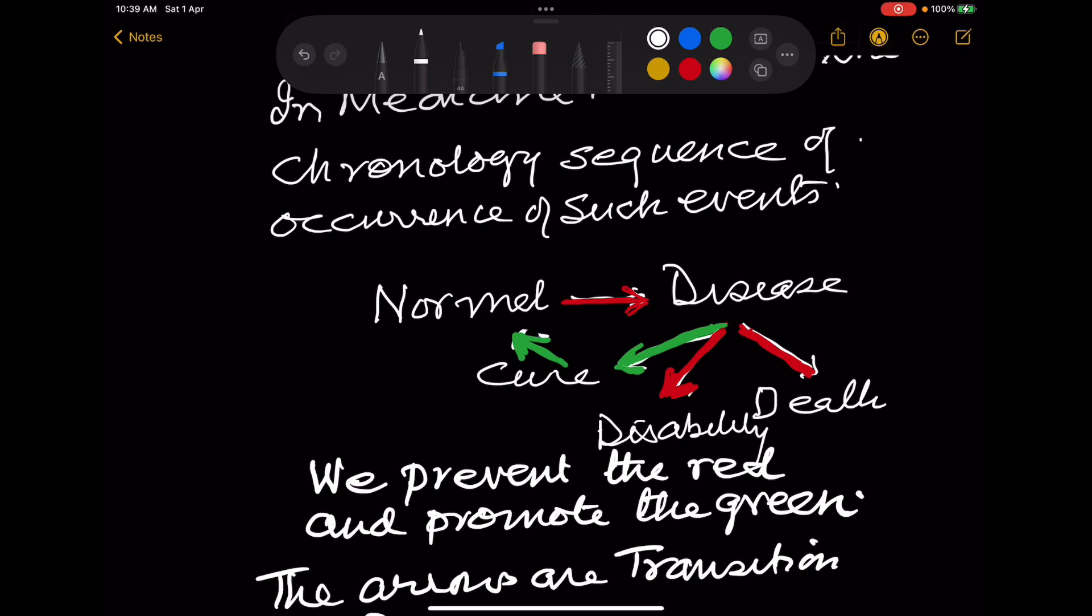Each arrow can be depicted by a transition rate. And this transition rate is controlled by factors which promote it or break it. So there are accelerators and there are breaks.